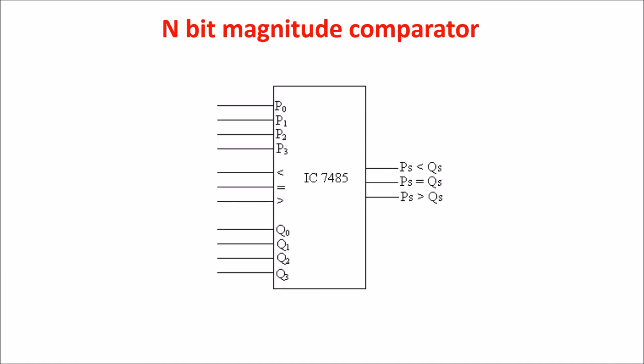This is the IC 7485, which is a 4-bit comparator similar to that seen before. The difference here is that this comparator has 3 extra inputs to receive the situation of the previous bit comparison.